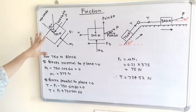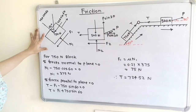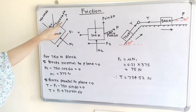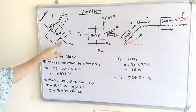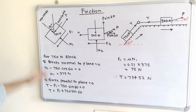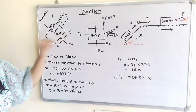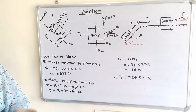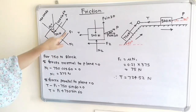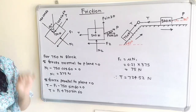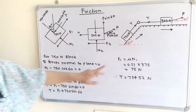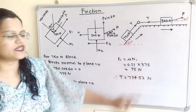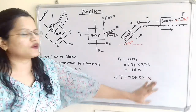The summation of forces parallel to the plane equals zero. The three forces are F1, T, and 750 sin 60. Taking T as positive: T minus F1 minus 750 sin 60 equals zero. Using the friction law, F1 equals mu times N1, so F1 equals 0.21 times 375, giving F1 equals 78.75 N. Therefore, T equals 724.52 N.